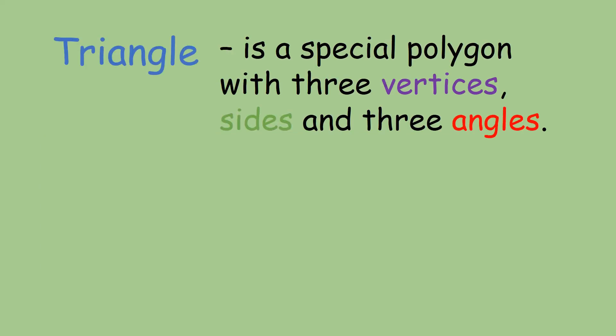A triangle is a special polygon with three vertices, three sides, and three angles.